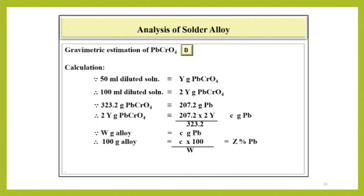Calculations. 50 ml diluted solution corresponds to Y gram PbCrO4. Therefore, 100 ml diluted solution corresponds to 2 into Y gram PbCrO4. 323.2 gram PbCrO4 corresponds to 207.2 gram Pb. Therefore, 2Y gram PbCrO4 corresponds to 207.2 into 2Y divided by 323.2 that is C gram Pb.